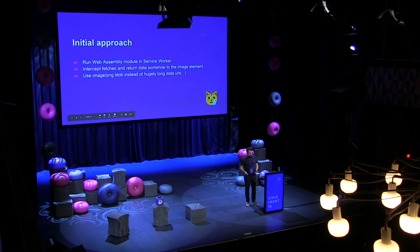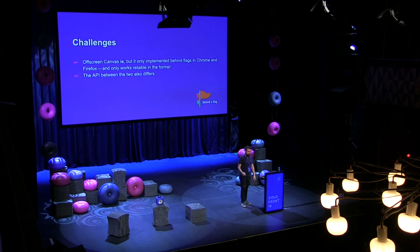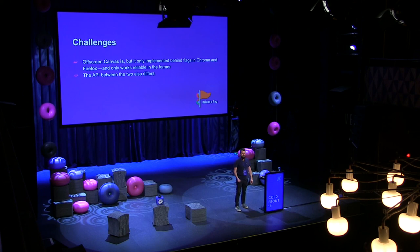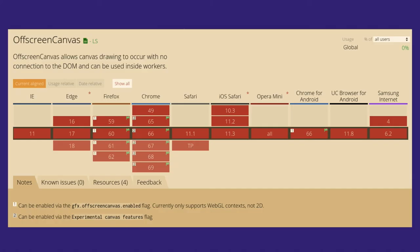I went through a few different approaches. Initially I said let's run WebAssembly in a ServiceWorker, intercept the fetches, and return something the browser can render. What about a PNG blob? That's better than generating a base-64 URL. But to get a blob, you need to use a canvas in browsers — and those are not available in workers, so not available in ServiceWorkers. Then I found a new standard called off-screen canvas. But it's implemented behind a flag in Chrome and Firefox, and the APIs differ because they implemented different versions of the spec. It's just a proof of concept, so let's try anyway.